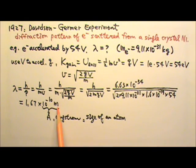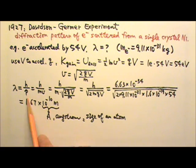10 to the negative 10th of a meter is also called Angstrom, and we write capital letter A with the little circle on the top for Angstrom. An Angstrom is about the size of an atom. So the wavelength of these 54 eV electrons is 1.67 Angstroms.